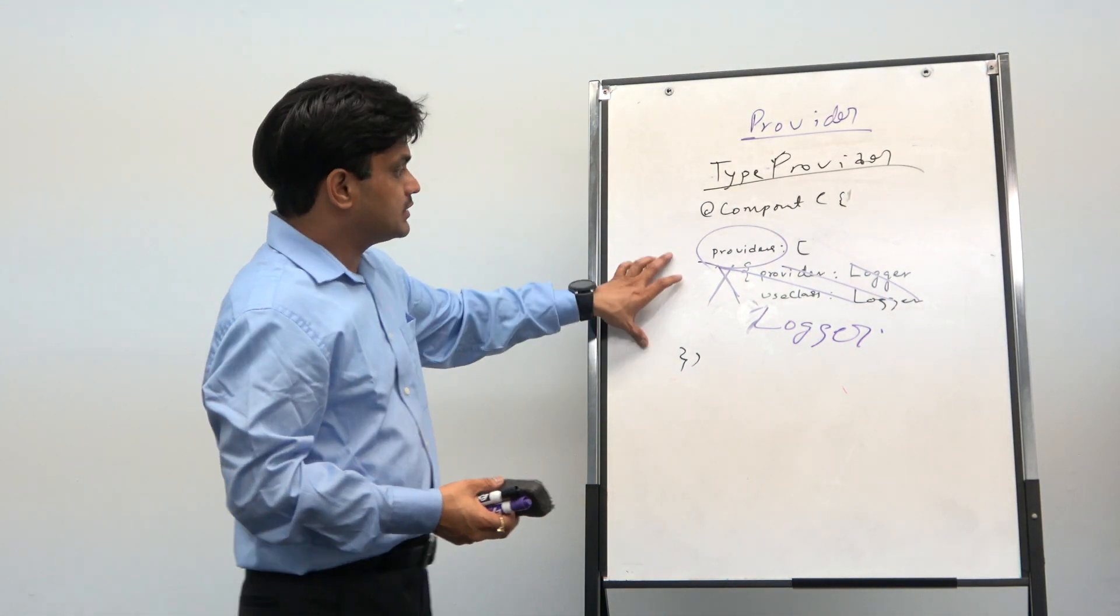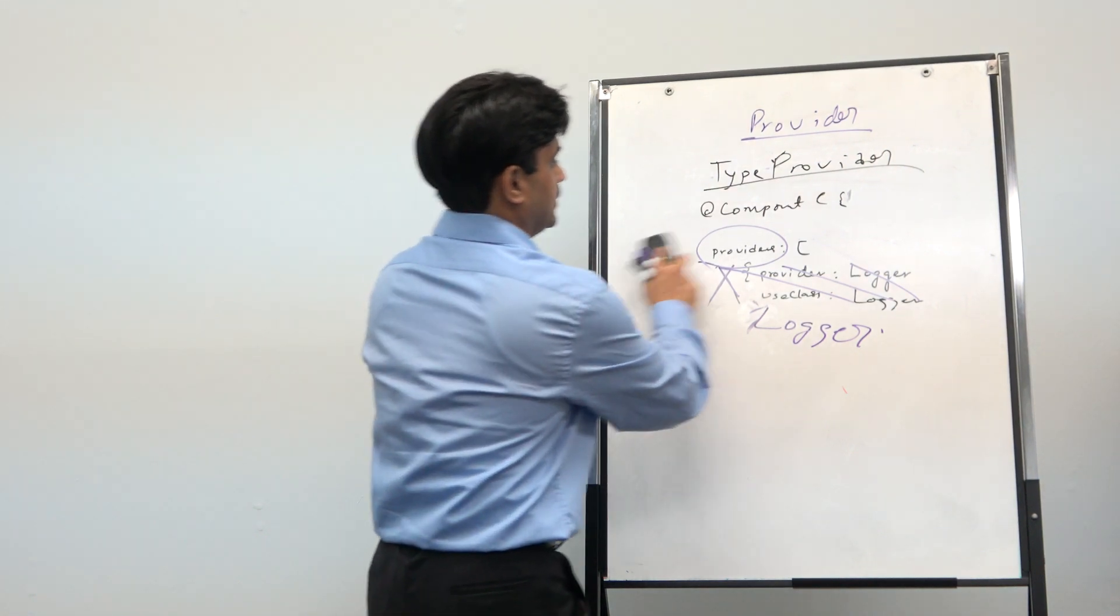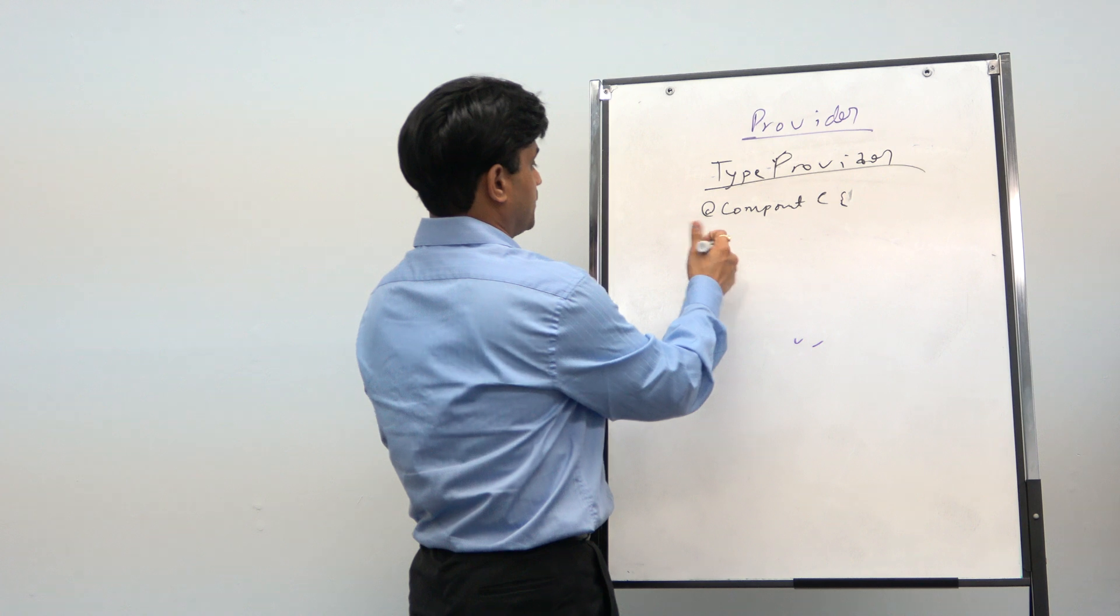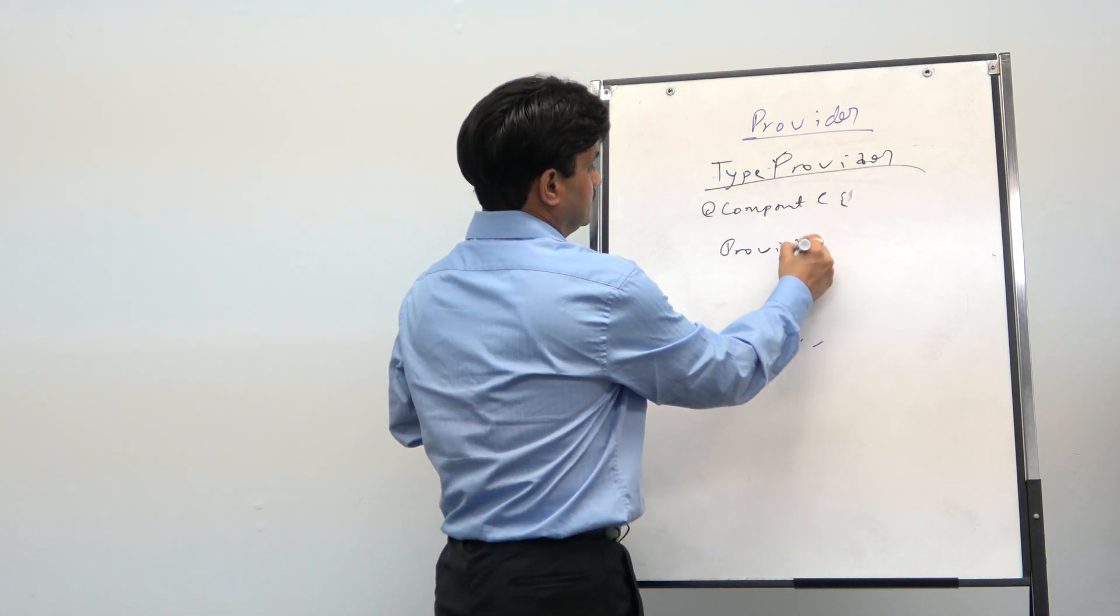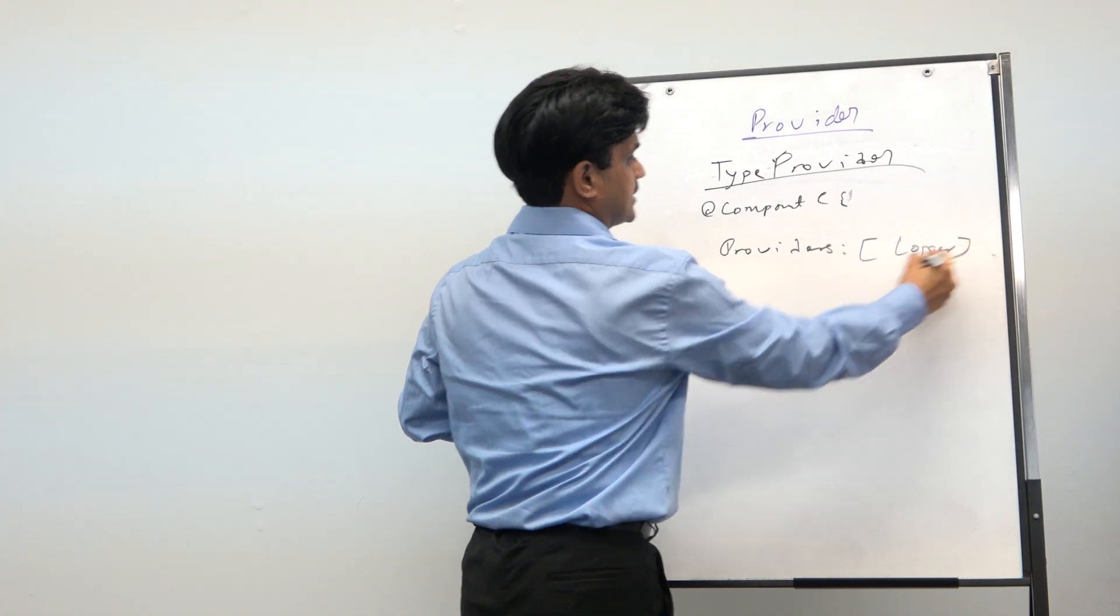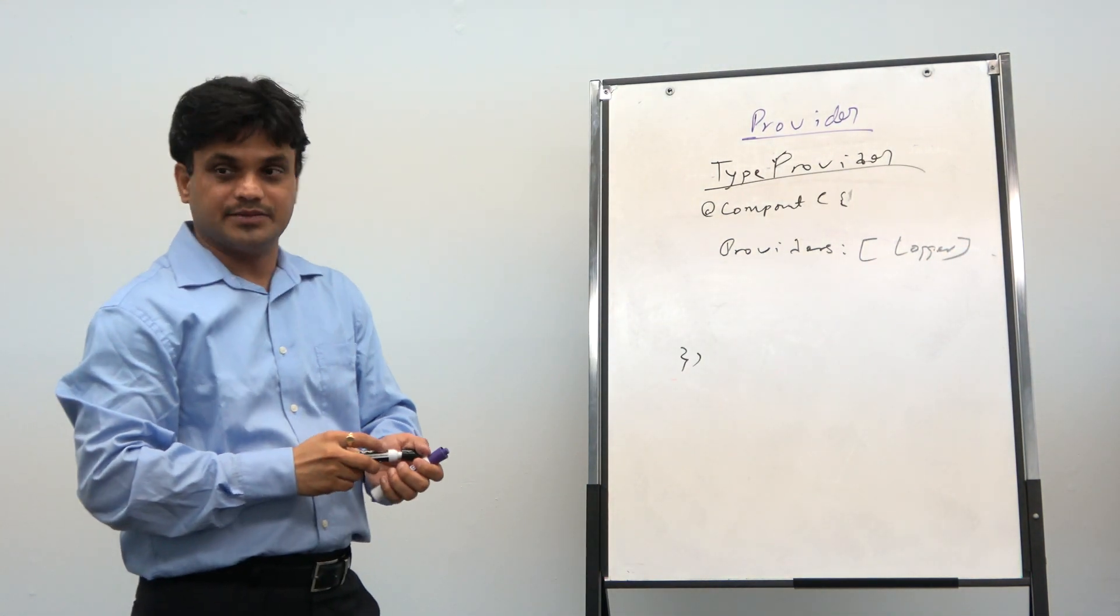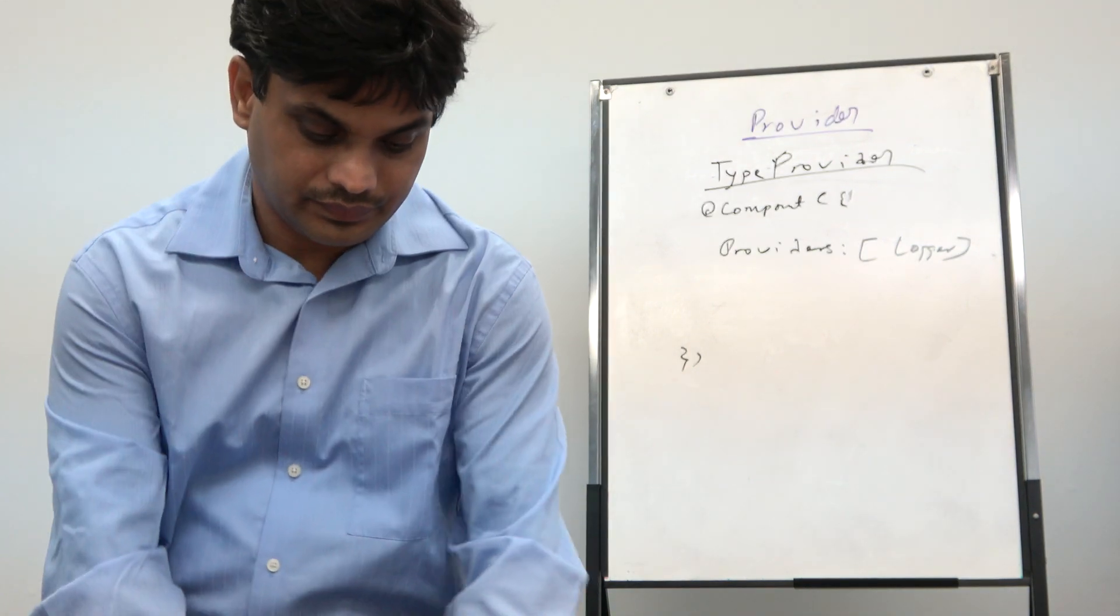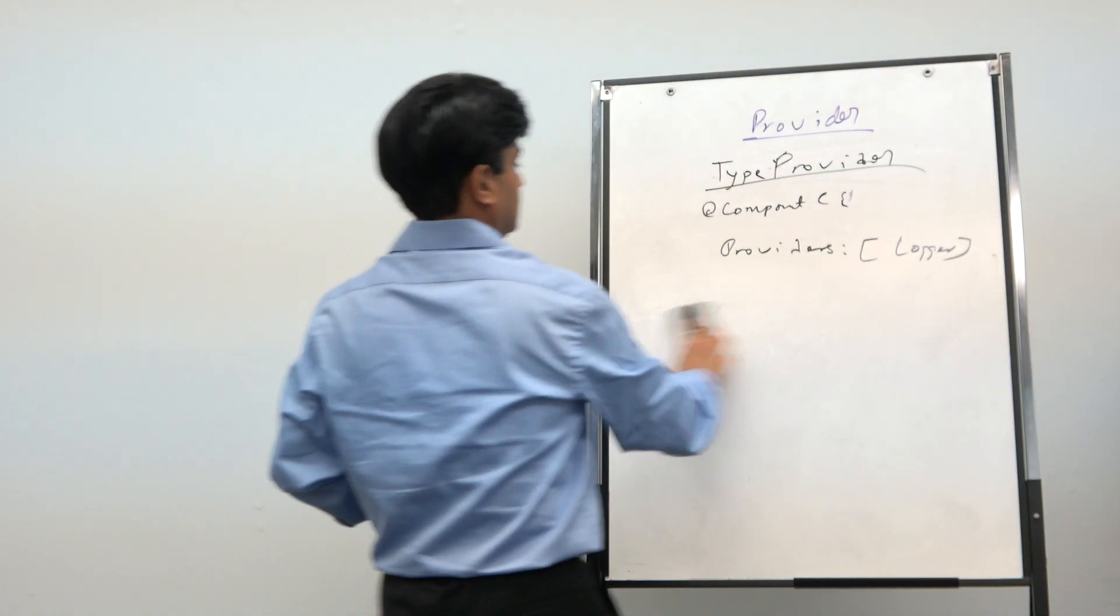The next time someone will ask to the injector, it will not again ask. Initially, that injector has that in a key value pair. Once it is there, then it starts giving the same instance. It doesn't ask. That's how singleton is achieved. This is the type provider where we say, in the type provider, it's just simple. We call it providers. And in the array, we will pass the class name. That's it. This is type provider. It's very simple. Let's do the next one.